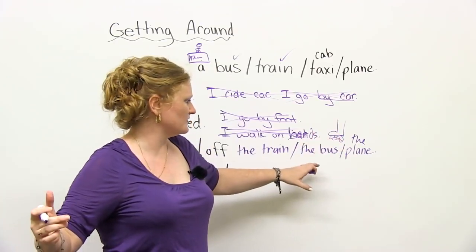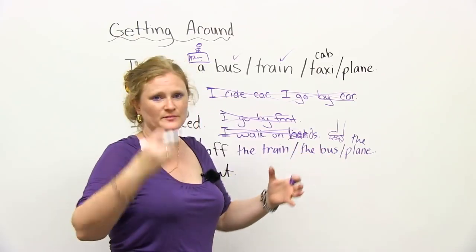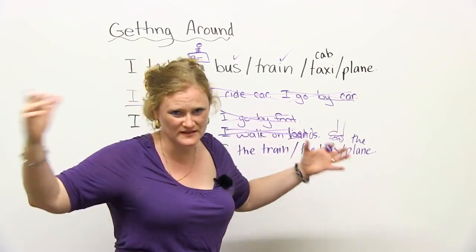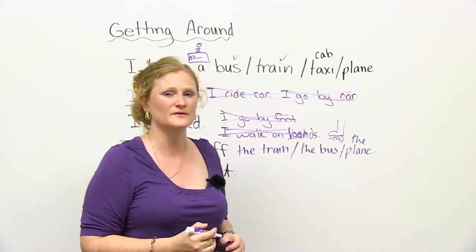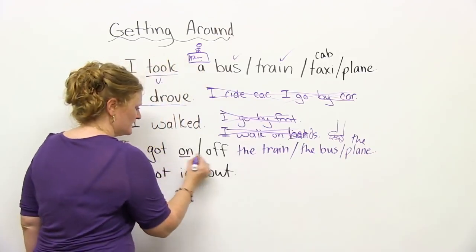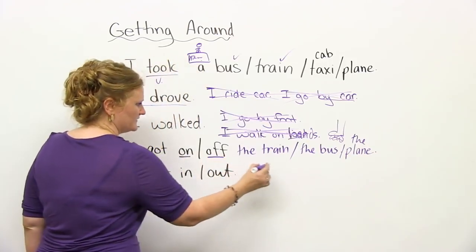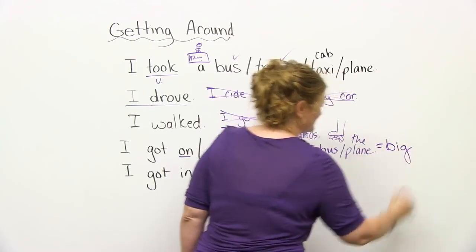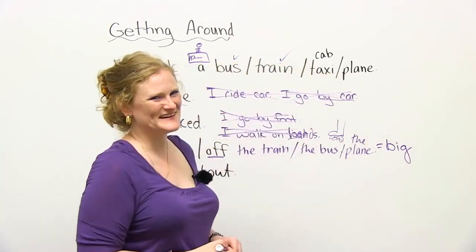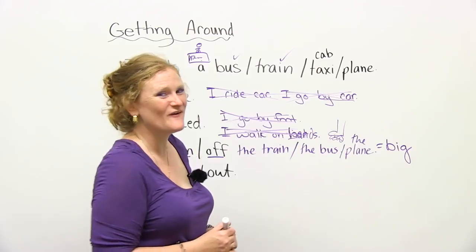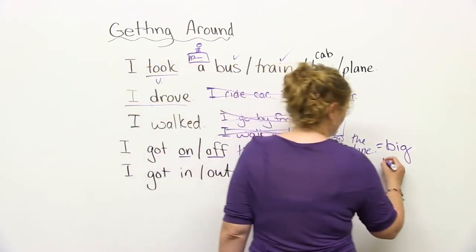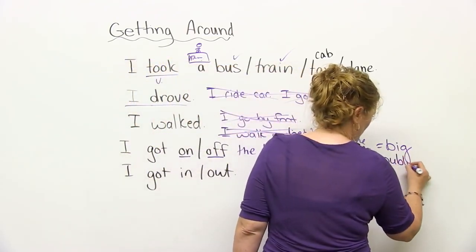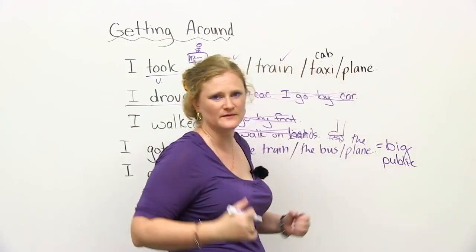You can think of it as something that is public or very large. So a train, a bus, or an airplane, you have to pay. It's really big, and you can fit many people on it. So you're going to get on or get off something that is very big. Or if it's public transportation, it can fit many people.